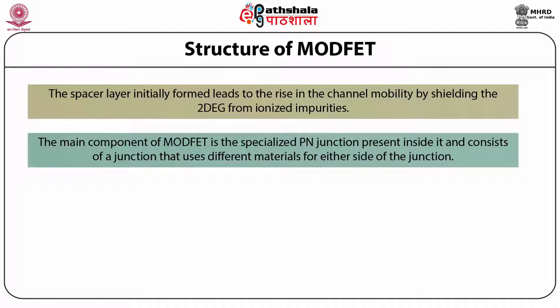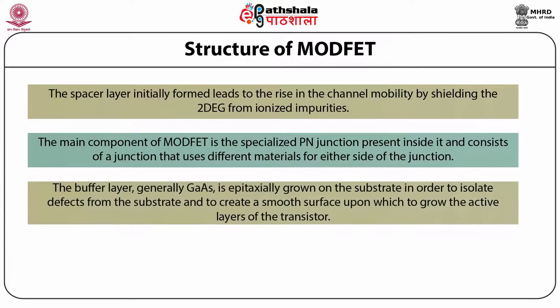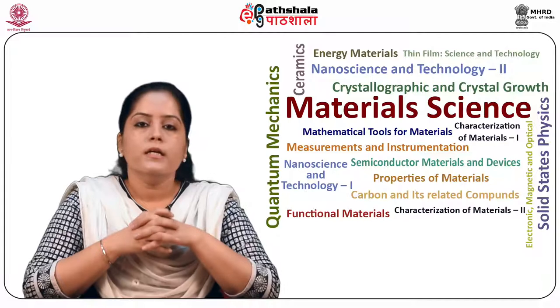From this figure, the buffer layer, which is generally gallium arsenide, is epitaxially grown on the substrate in order to isolate the defects from the substrate and to create a smooth surface upon which to grow the active layers of the transistor.